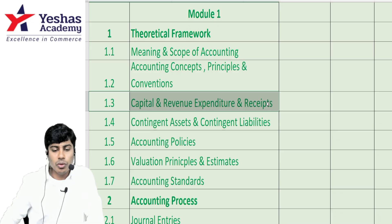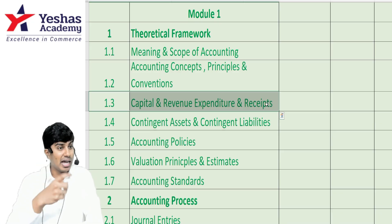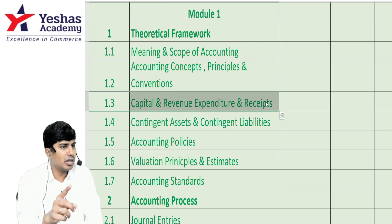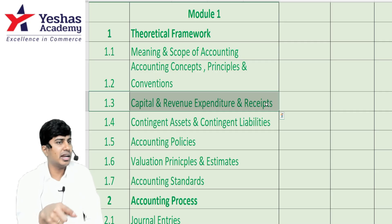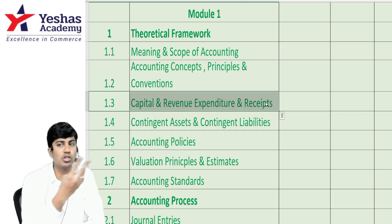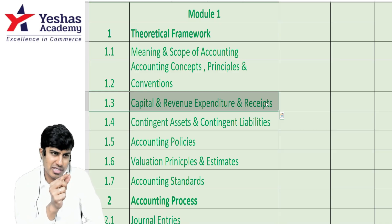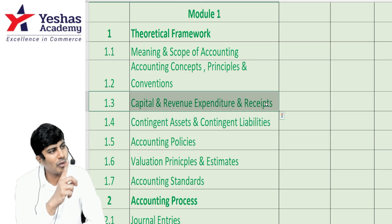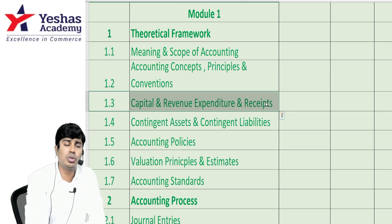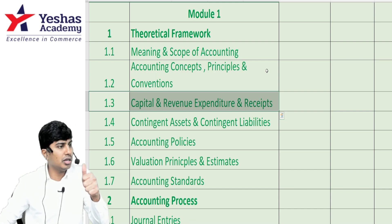From capital and revenue, they give a list of items — 4 or 5 items — and ask you to classify them as capital or revenue. Sometimes 8 items are given for 4 marks, sometimes 4 items for 2 marks, sometimes half a mark per item, sometimes 1 mark per item. There is also a chance they include capital and revenue in your true or false questions, so be ready.